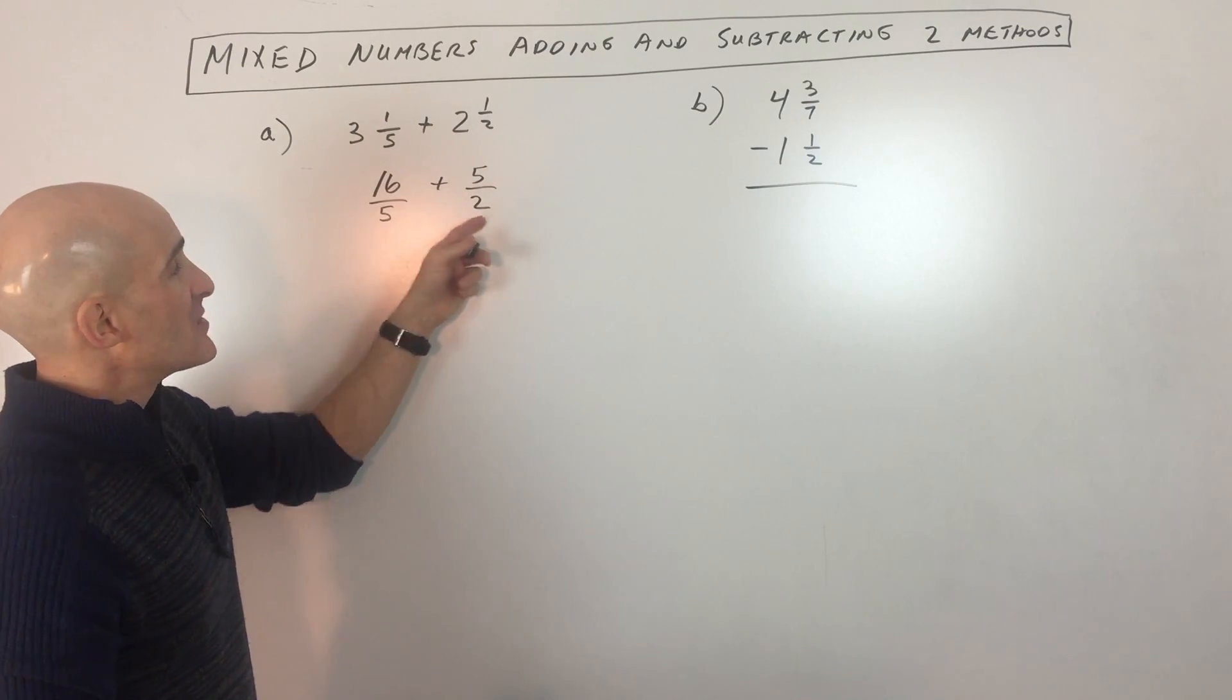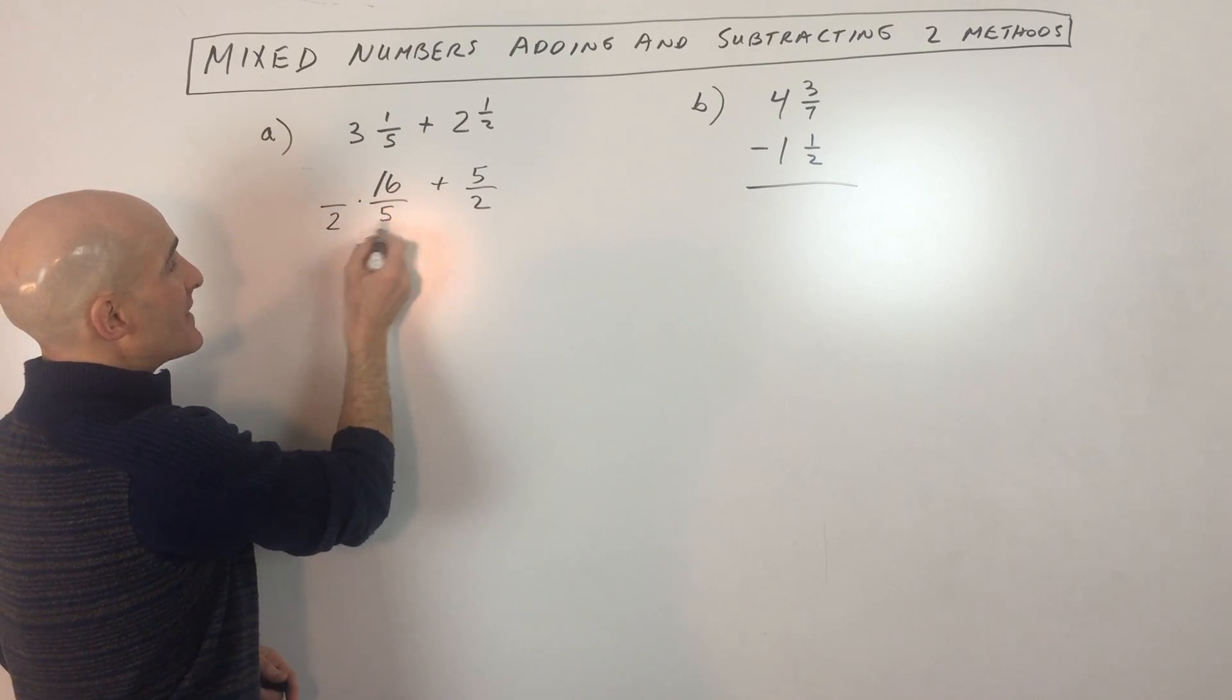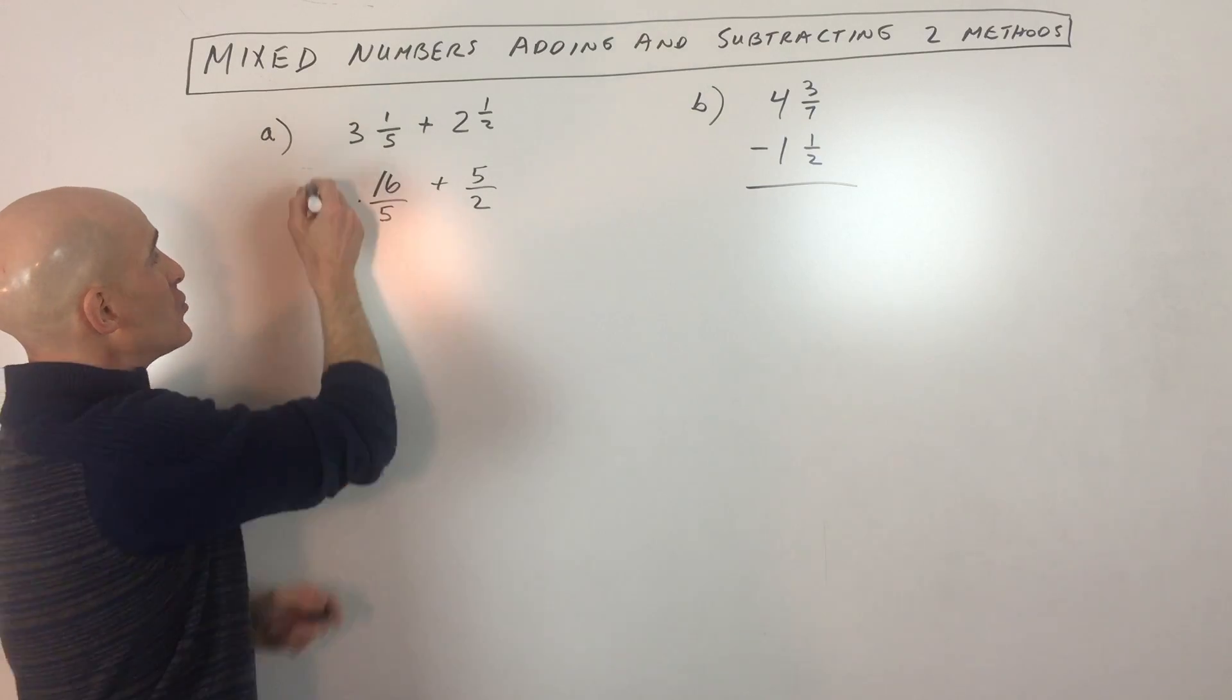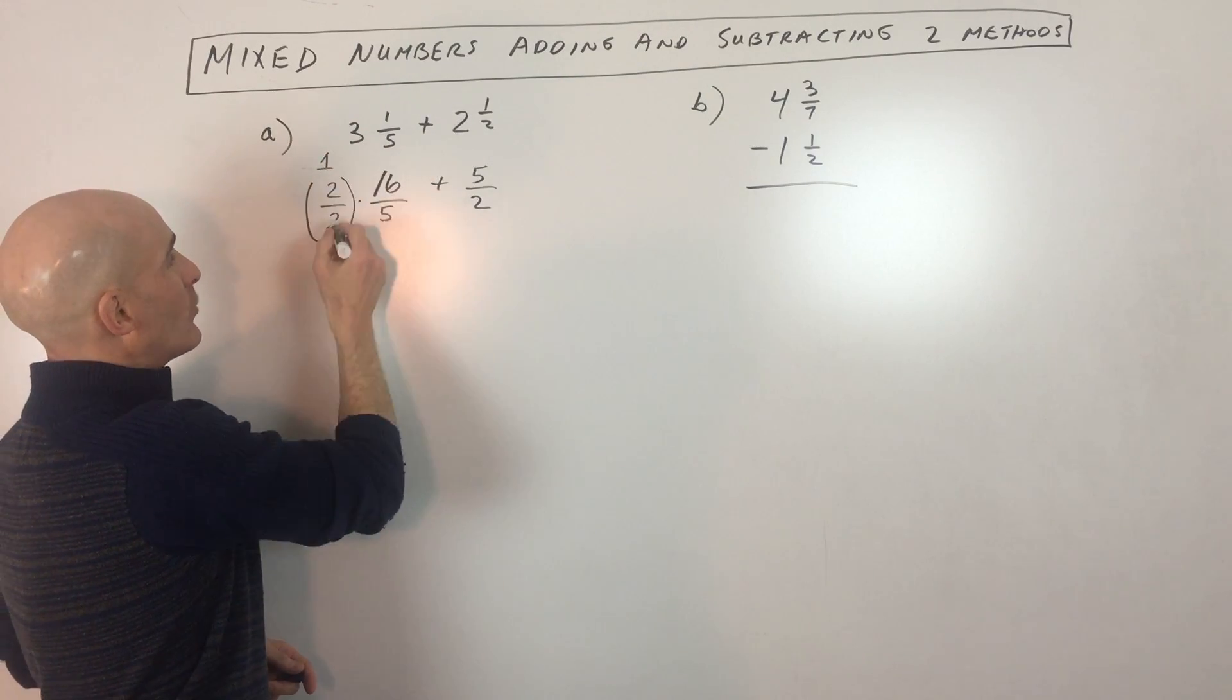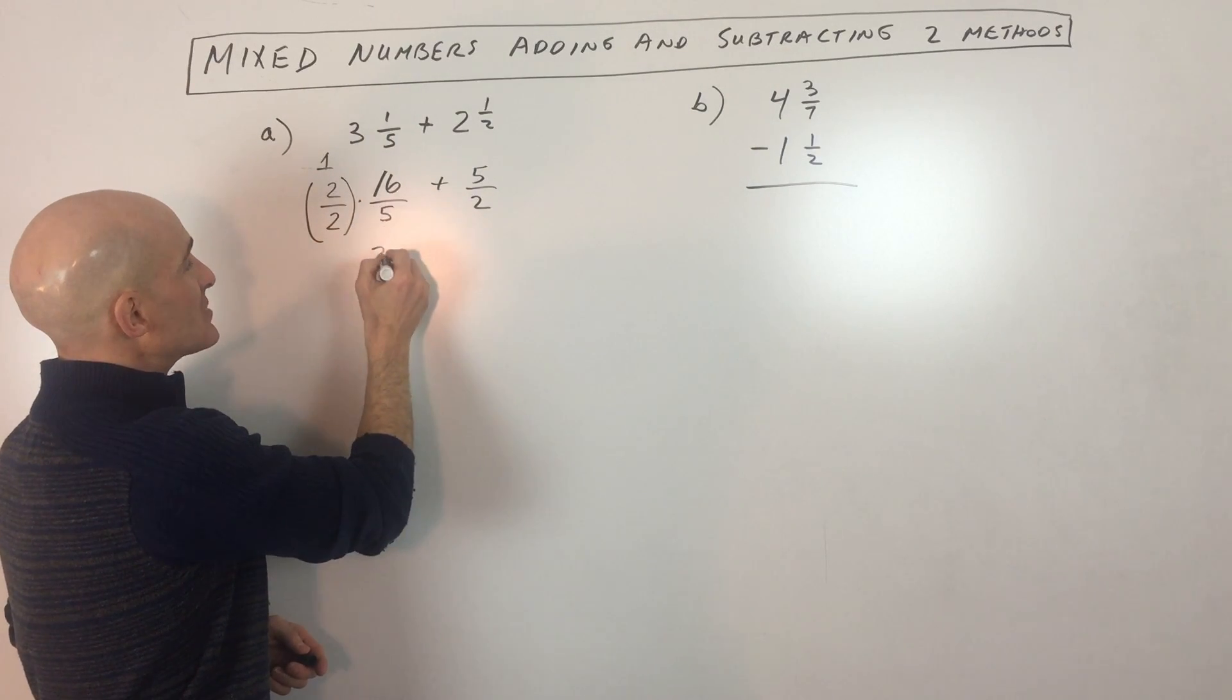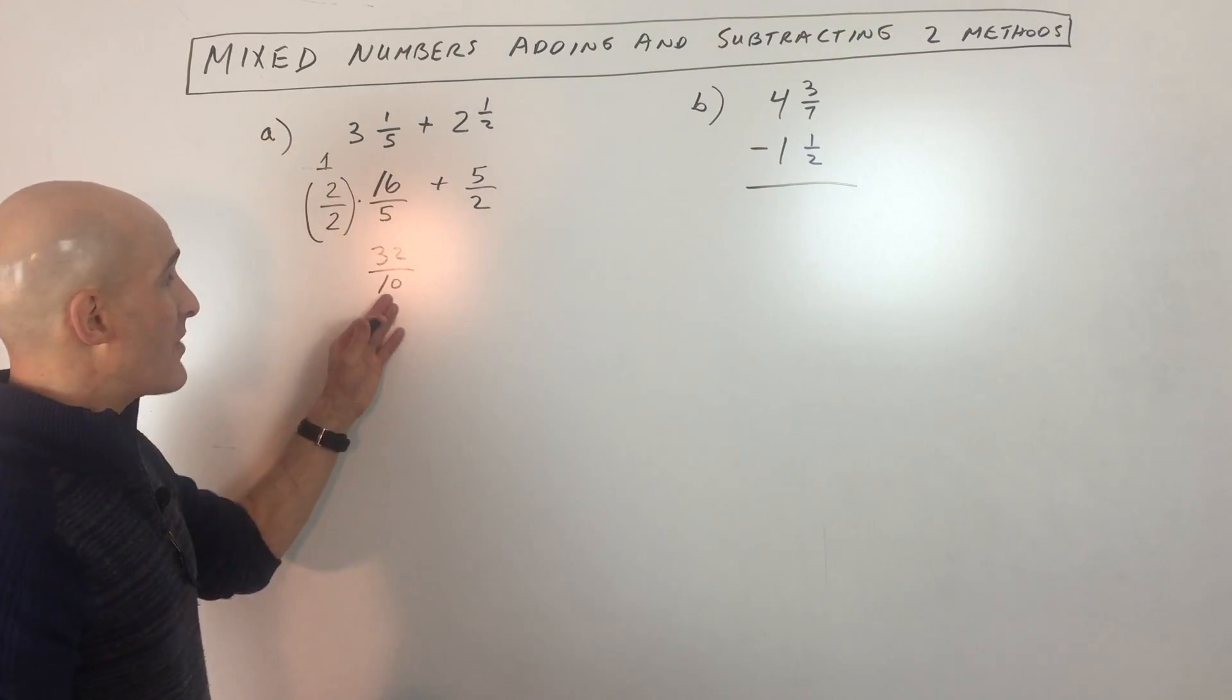So in order to get these denominators to be 10, this one I'm going to have to multiply by two. But whatever I do to the denominator, I want to do the same thing to the numerator because two divided by two is really like one and one times anything is itself. So if we say two times 16 is 32, two times five is 10, we've converted it to tenths.